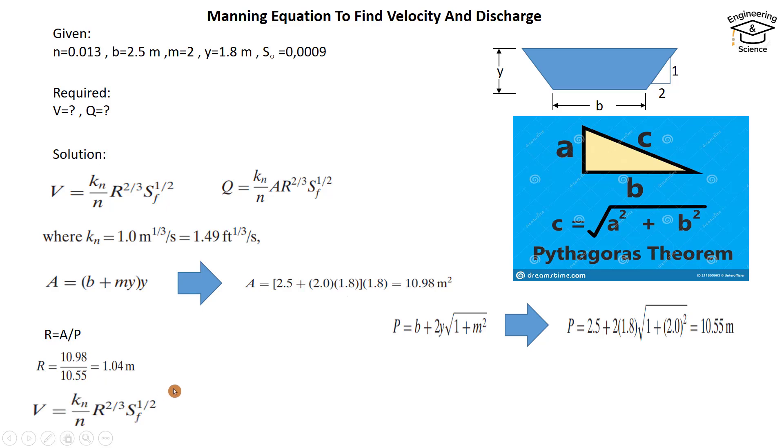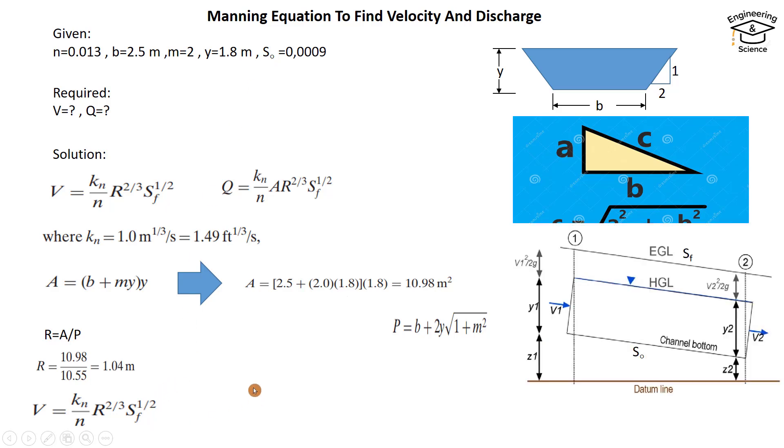Now we have to find velocity. Sf is somewhat different from S₀, but Sf—the friction slope or slope of the energy grade line—when we have constant velocity and depth, will be parallel with the bottom slope.